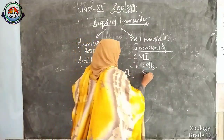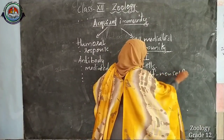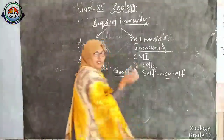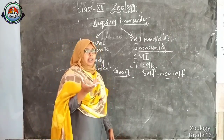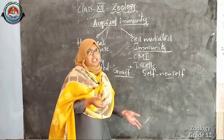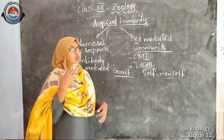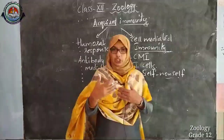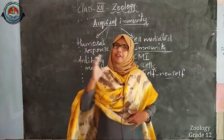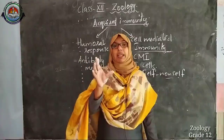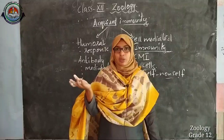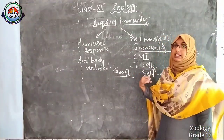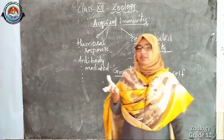The distinction between self and non-self is done by T cells. Since a transplanted organ is non-self, T cells may reject the graft. To avoid this, physicians look for tissue matching and blood group matching — only 100% matched organs should be transplanted. Otherwise, graft rejection may occur. Immunosuppressant drugs may also be injected to suppress T cells.